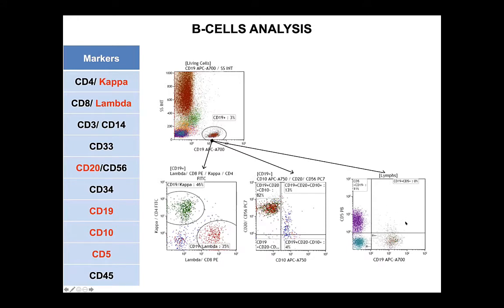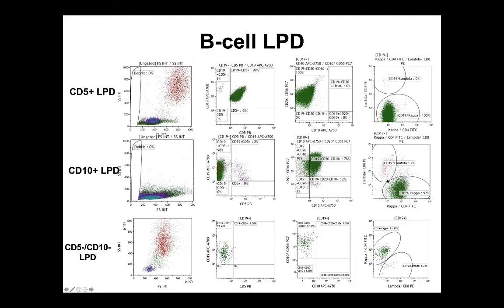We can screen for any aberrant CD5-positive B cell population using CD19 versus CD5 out of the lymphocyte population. With those antibodies, we can detect CD5-positive lymphoproliferative disorders. The other row represents a CLL case: CD5 positive, dim CD20, and dim kappa. Of course, this is not sufficient to issue a final report; additional investigation is needed. The middle row is a lymphocyte cell suspension from a lymph node — CD10 positive and kappa light chain restricted — and this is a follicular lymphoma example. We can also detect CD5-negative and CD10-negative lymphoproliferative disorders; this is a peripheral blood sample with a bright CD20-positive B cell population and kappa light chain restricted, which would require additional testing as well.